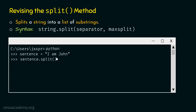If we do not provide any arguments to the split method, then by default the separator will be any whitespace character and maxSplit will be minus 1. Whenever split method sees a whitespace character, it will split the string into substrings. There will be a total of three substrings — 'I', 'am', and 'John' — because there are two whitespace characters in between. Those substrings will be stored as individual items of the list.